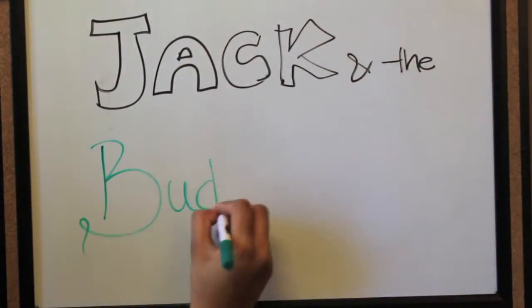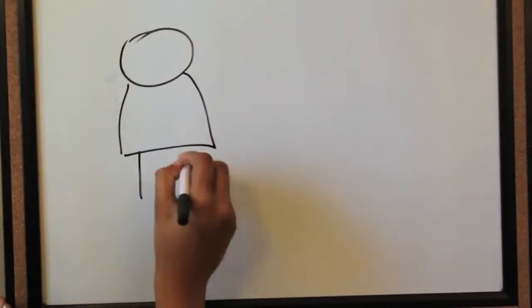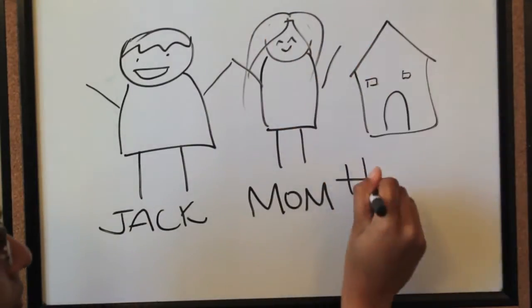This is the story of Jack and the Budget Stock. So this is Jack. That's his mom. And well, they live in a house.